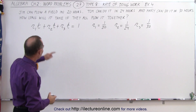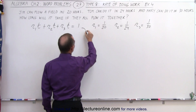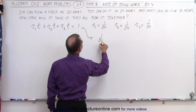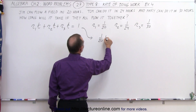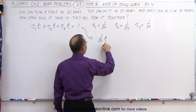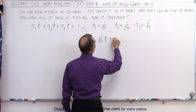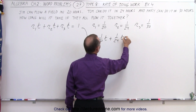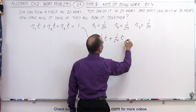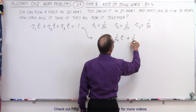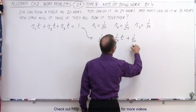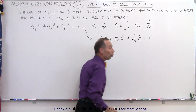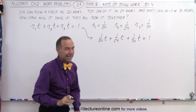So now we can plug that into the equation. This becomes 1/20th of a field in every hour times the amount of time they all work together, plus 1/24th of a field times the amount of time they all work together, plus 1/30th of a field in every hour times the amount of time they all work together, which adds up to the whole job being done.